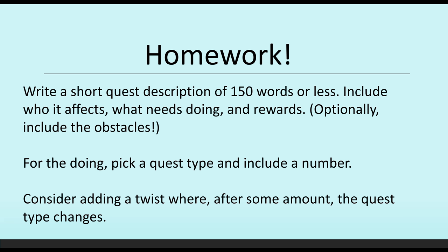Optionally, you could also include the obstacles — am I fighting particular people, am I avoiding soldiers to pick flowers? For the doing, pick a quest type and include a number: how many times am I doing something? Am I destroying five things, defeating three soldiers, picking up ten flowers? Also think about a potential twist. Many games that have much more complex stories have small twists to them, where after some amount of progress, or when you go to turn in the quest, the quest type changes. For example, you might be asked to go pick up flowers, and when you pick up the flowers and return back, the person might be gone — and now the quest is to go find the person instead. So consider adding a potential twist that extends the quest.